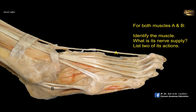For muscles A and B, identify the muscle, its nerve supply, and list two of its actions. The first muscle is the tendon of extensor hallucis longus. As a member of the extensor compartment, it is supplied by the deep peroneal nerve. As its name indicates, it extends the big toe — at both the interphalangeal and metatarsophalangeal joints — as well as extending the foot at the ankle joint.